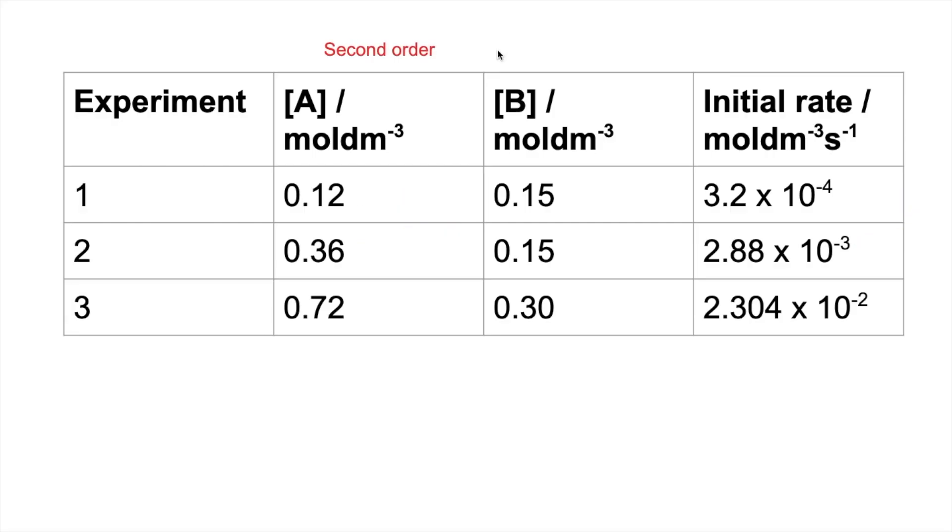So if we move on to B now, the trickier one, I'm going to use experiments 2 and 3. I could have used 1 and 3, but it's easier to do it this way. So in experiments 2 and 3, you can see that the concentration of A has doubled and the concentration of B has also doubled. So if we look at what's happened to the rate, we're going to divide this number here by this number here. That's an 8-fold increase.